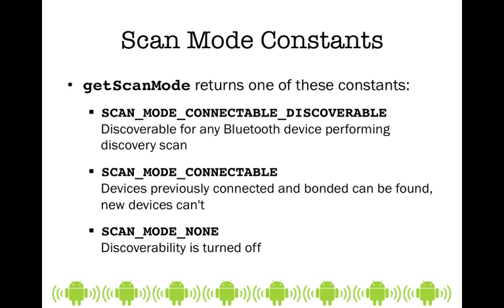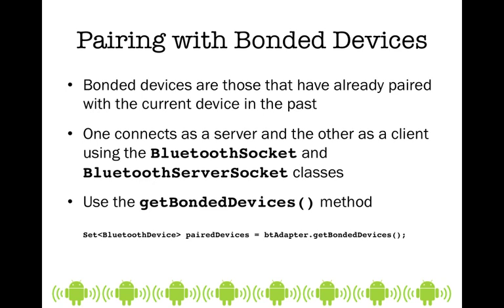If you're only looking for devices that have been bonded before, you can use scan mode connectable. But if you want more flexibility with other devices in the area, then you want to use scan mode connectable discoverable. Bonded devices are those that have previously paired with the current device in the past. To get those bonded devices, we use the get bonded devices method.